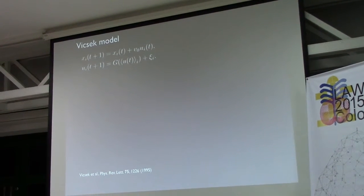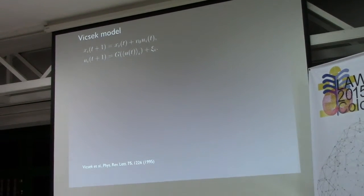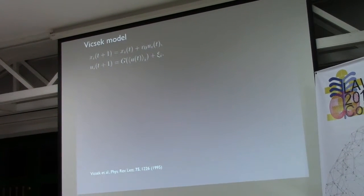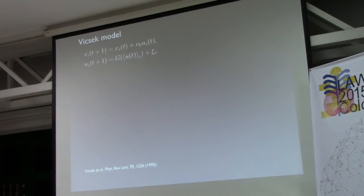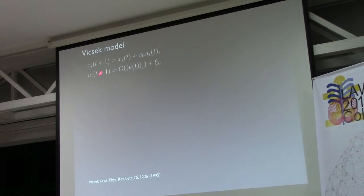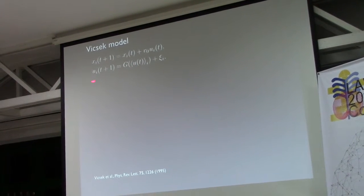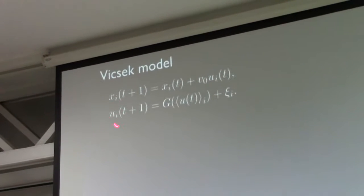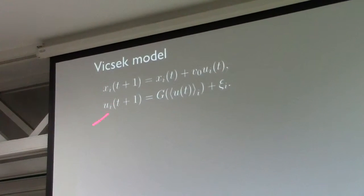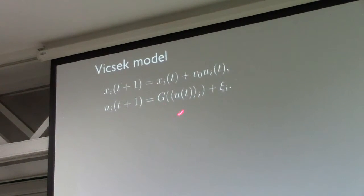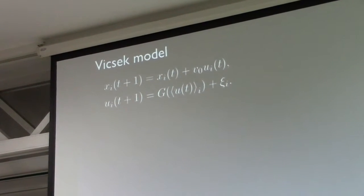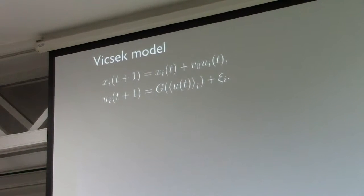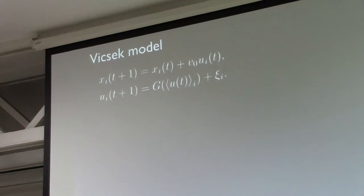About ten years later in 1995, Vicsek and collaborators developed a very simple model to study this from the point of view of physics. It's a discrete model in space and time, and particles move with a constant speed. This is the direction of motion. He only considers alignment among the velocity of the particles. Particles can cross over each other and are subjected to an angular noise.